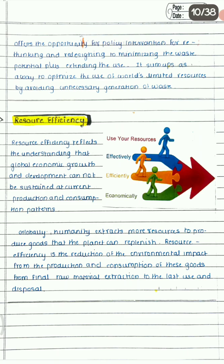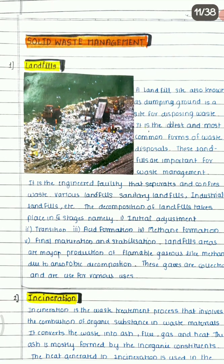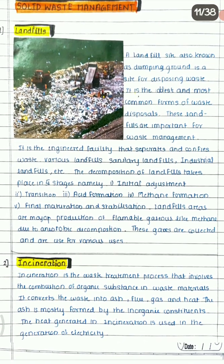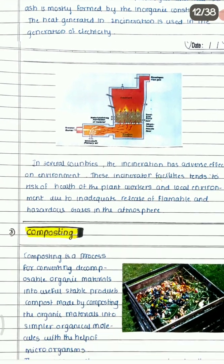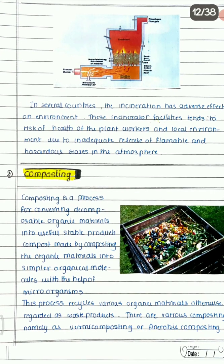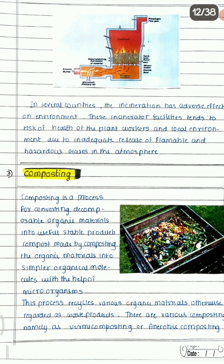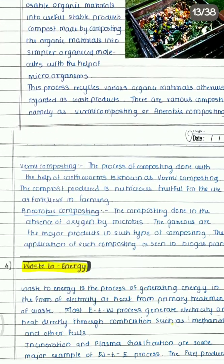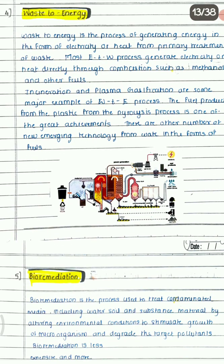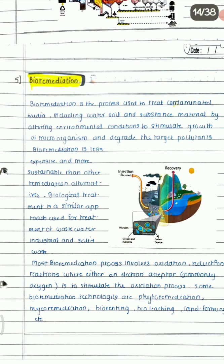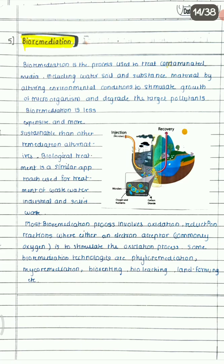After that, you can write about different types of waste — like solid waste — covering the different types of solid waste, how they are managed, the methods by which these wastes are managed, and how they are converted into different energies. Adding charts to your project makes it more attractive, which helps you gain more marks.